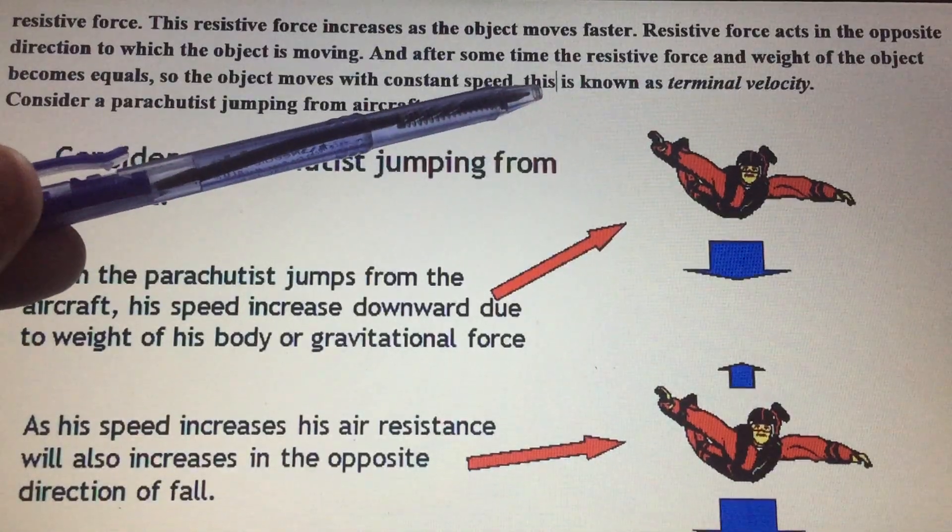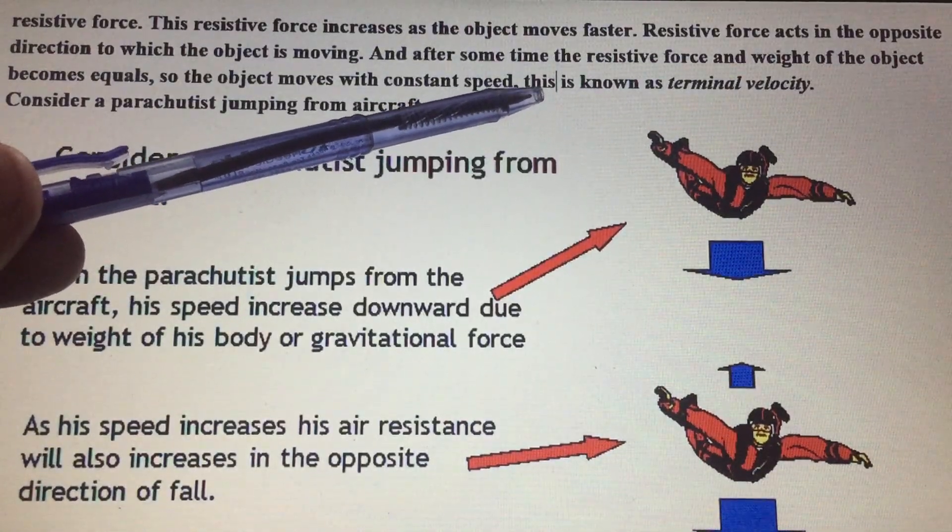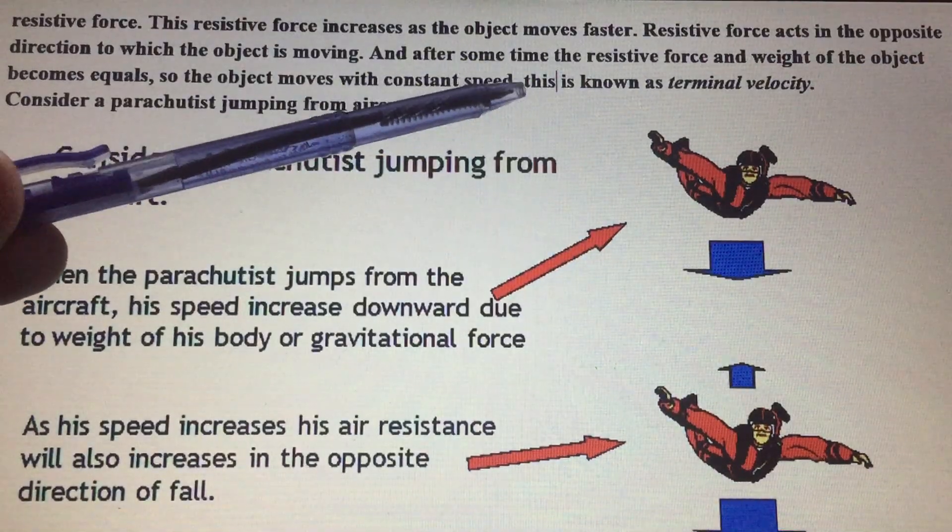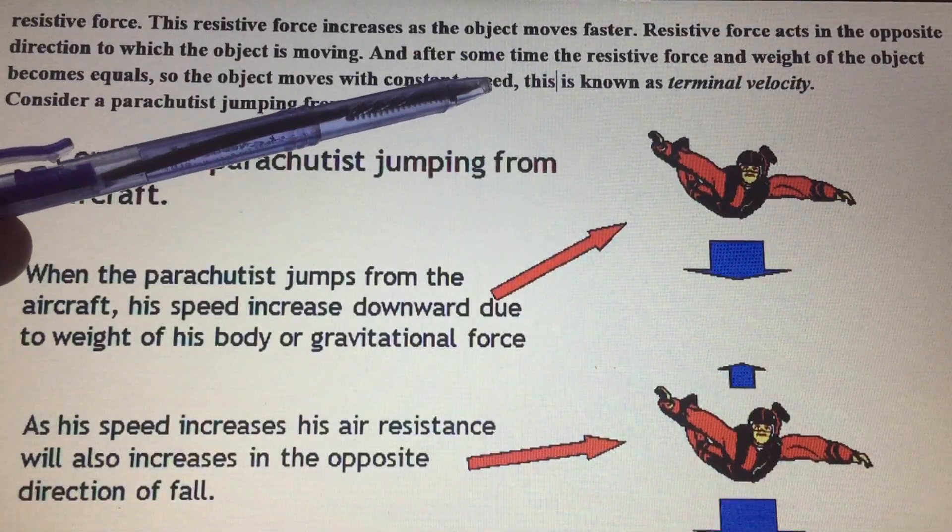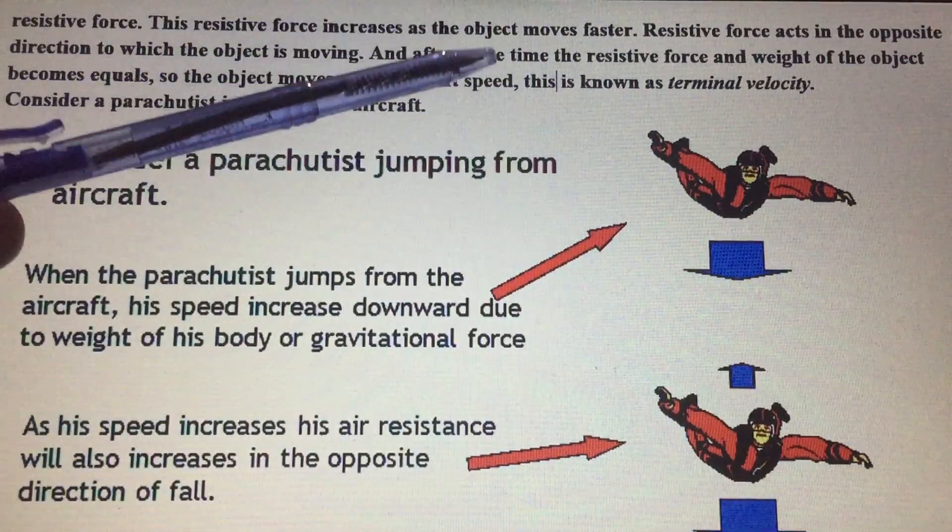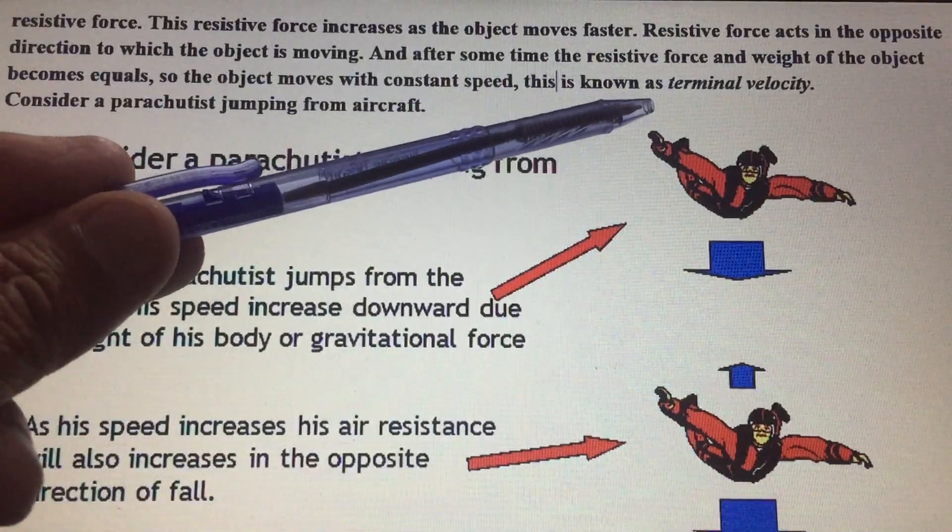When these two forces interact with each other, after some time both forces become equal, so the object moves with constant speed. This constant speed is called terminal velocity.